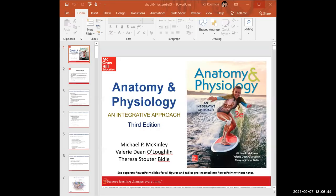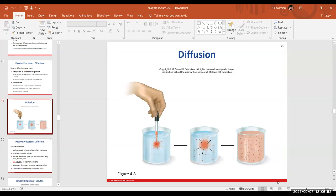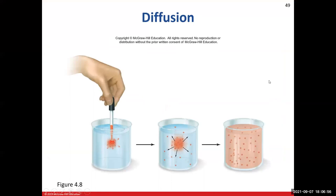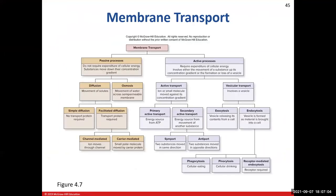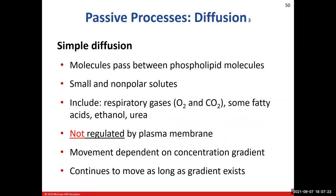Let's continue with chapter four on the cell. When we left off we were talking about diffusion — the movement of solutes, a passive process. We're talking about membrane transport and how we get things in and out of the cell across the plasma membrane, starting with passive processes. Diffusion is the movement of solutes from an area of high concentration to an area of low concentration.